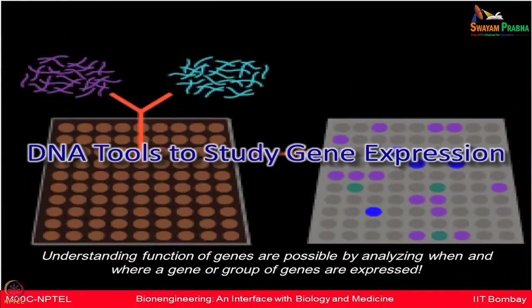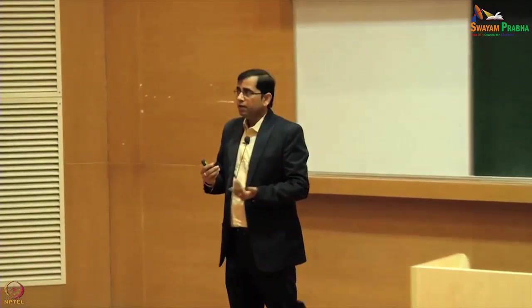If you want to study which gene is expressed at which time — for example, a normal individual versus someone suffering from a given cancer type — which proteins or genes are expressed in the cancer individual, how to study that? You want to know which mRNAs are being expressed, how they differ from the normal individual, which proteins are being made, and how they differ from normal. This is known as expression analysis.